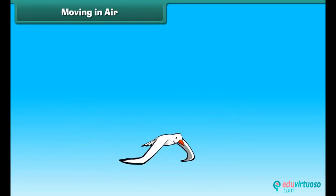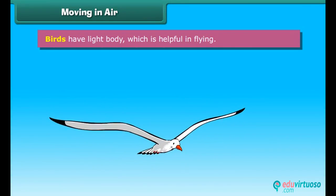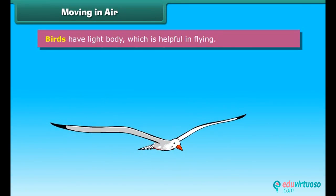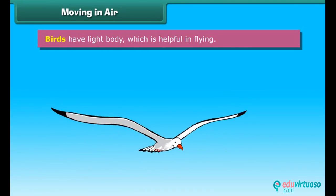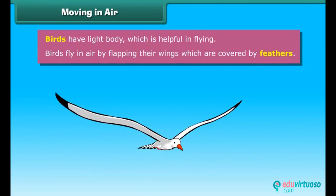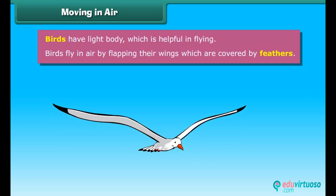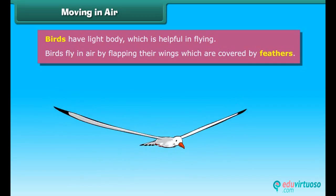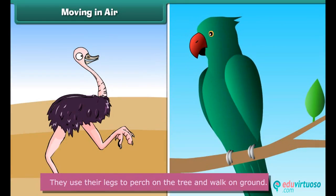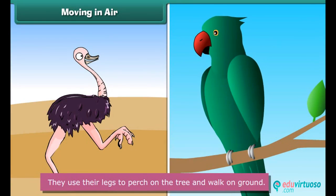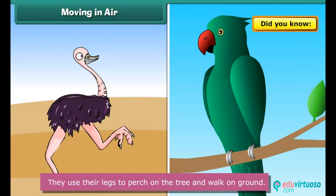Moving in air: Birds have a light body which is helpful in flying. Birds fly in air by flapping their wings, which are covered by feathers. They use their legs to perch on trees and walk on the ground.